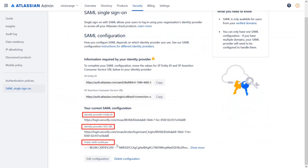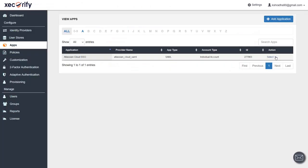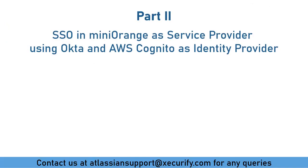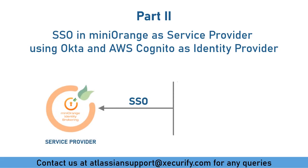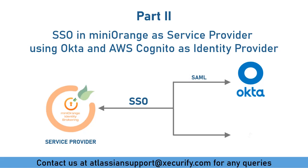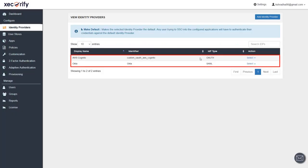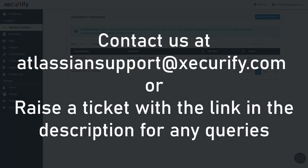Here is the SAML configuration in Atlassian Cloud Access. And here in the Minirange IDP dashboard, you can see that Atlassian Cloud is configured using SAML protocol. In part 2, we have configured SSO in Minirange as service provider with two identity providers: Okta which supports SAML, and AWS Cognito which supports OAuth protocol. You can see those configured IDPs in the Minirange Identity Providers tab. If you face any difficulties while configuring SSO for your Atlassian Cloud app, you can write to us at atlassiansupport@xecurify.com, or raise a ticket using the link in the description.